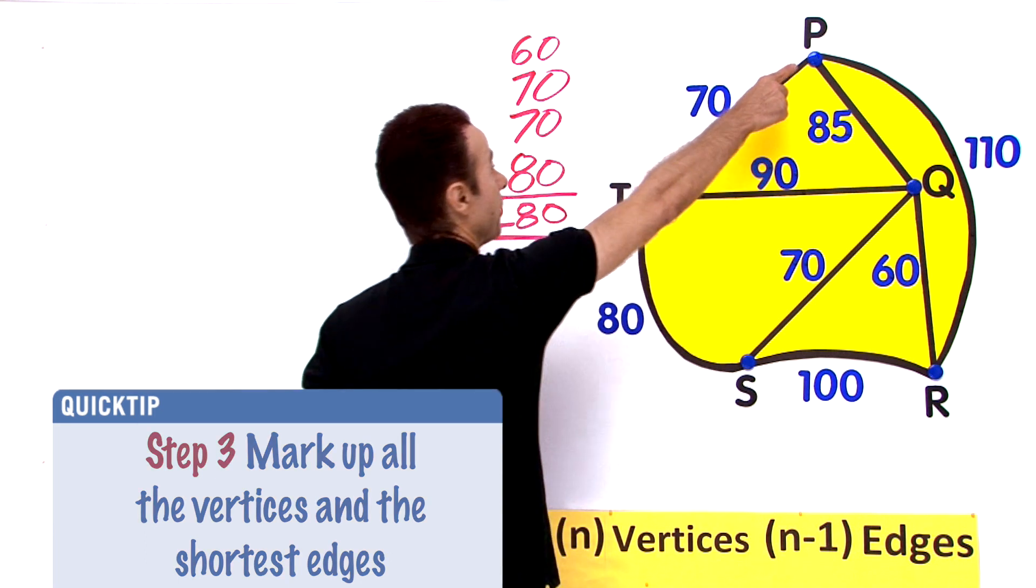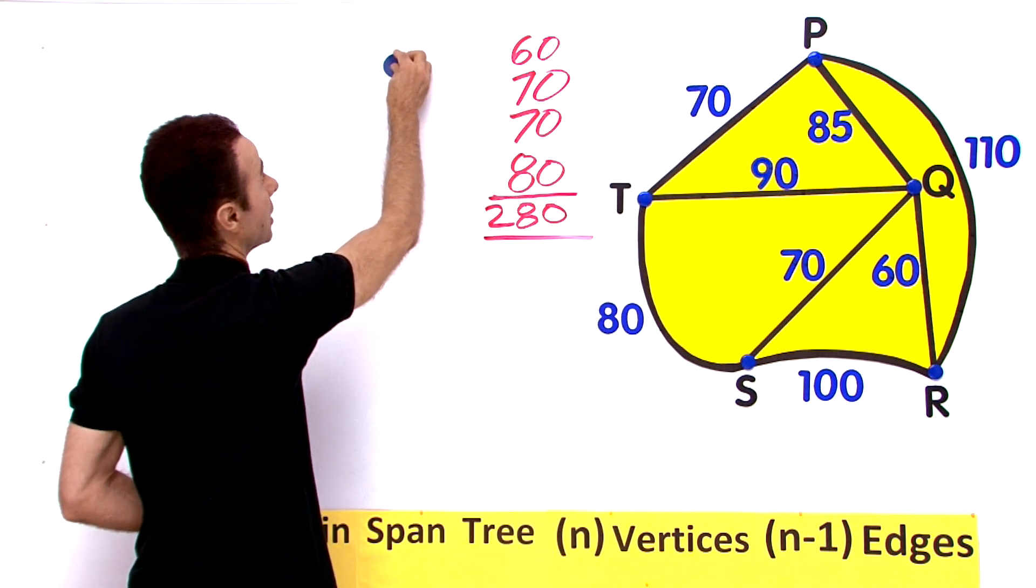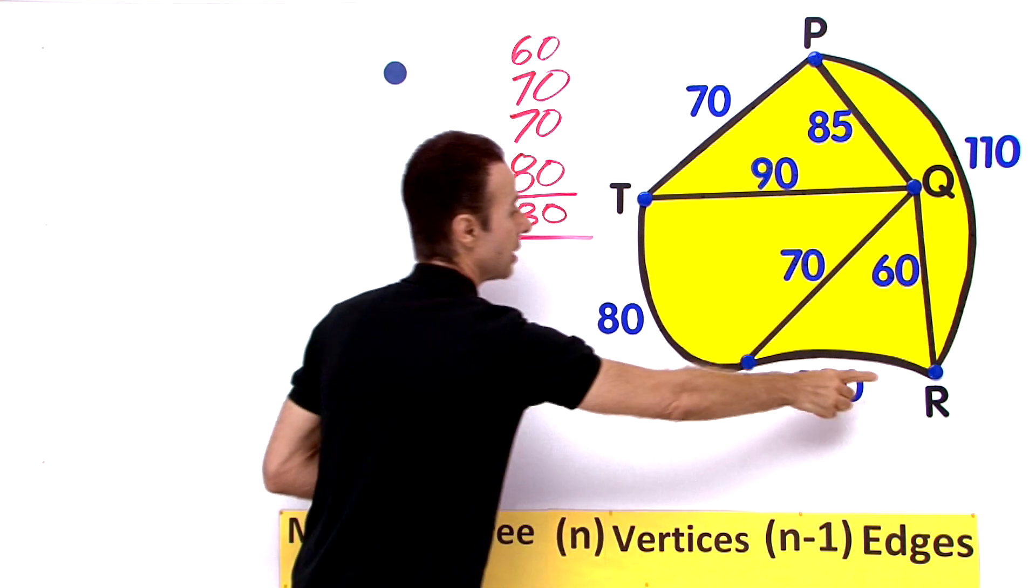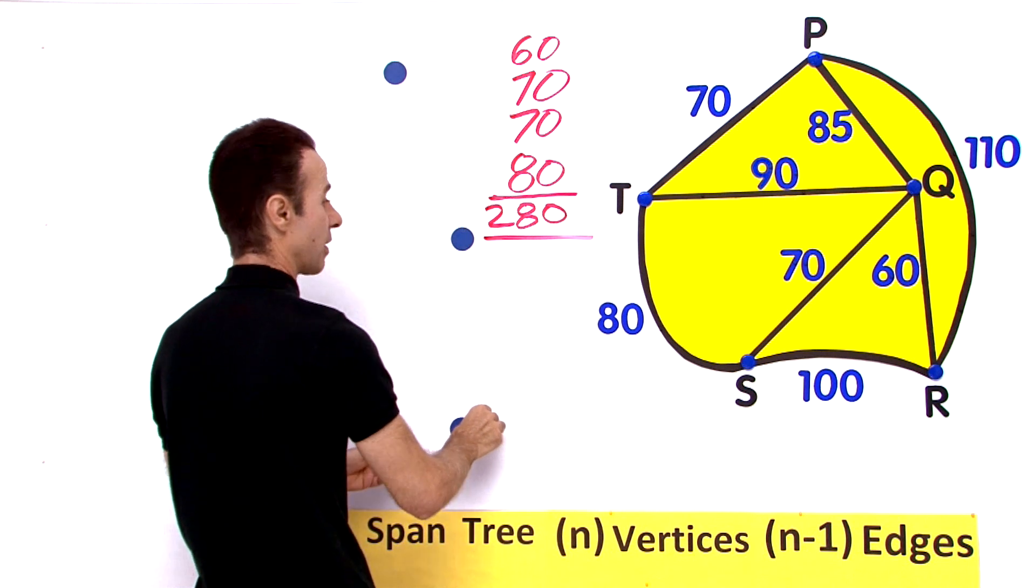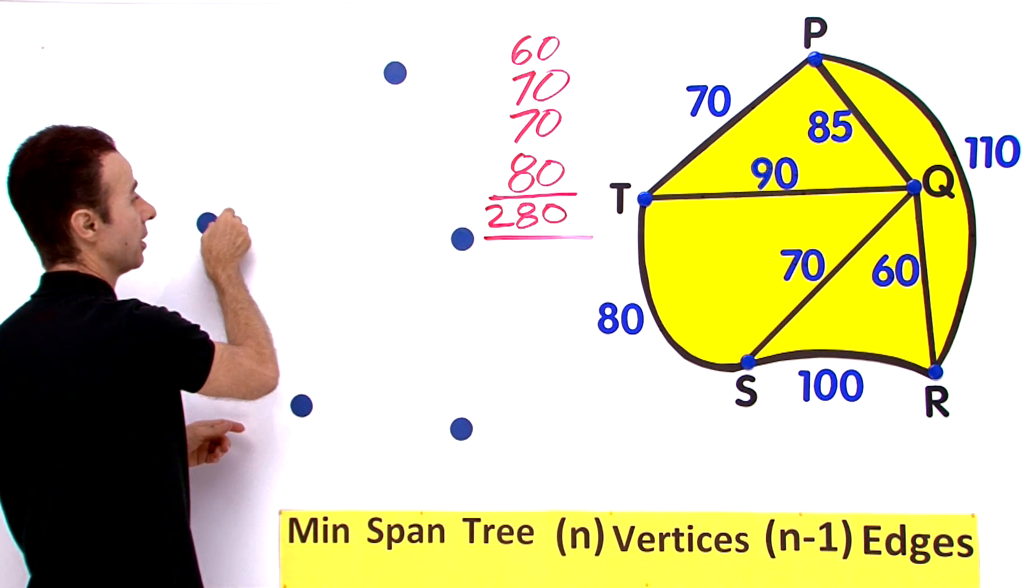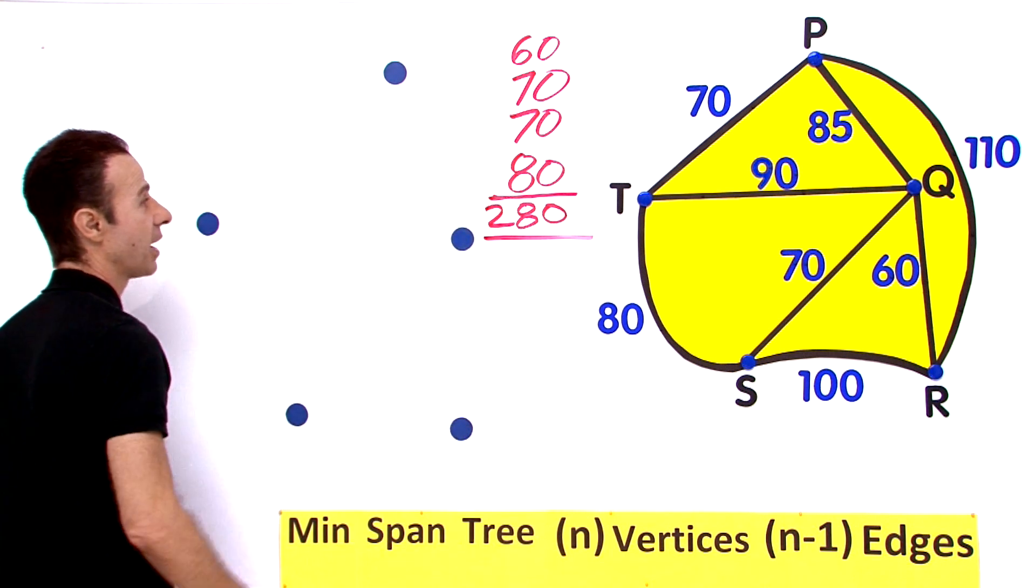So let us put the vertices. We have one up here for P, so let us say that P right over there. Let us put P there. We put Q right there, R there roughly, S can go here, T can go there. Now one, two, three, four, five, that is a good check, we have five.